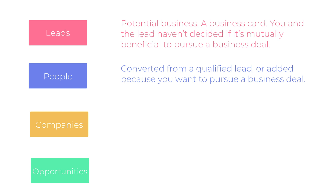People are converted from a qualified lead, or added because you want to pursue a business deal. They represent the individuals associated with that deal. Some of you may go straight to adding contacts as people into your system, rather than starting by adding them as leads and converting them later. The question is whether you and your contact need to mutually decide if it's beneficial to pursue business. If you're adding contacts you're already conducting a business deal with, then you can just add them as people.